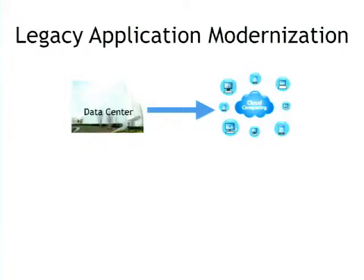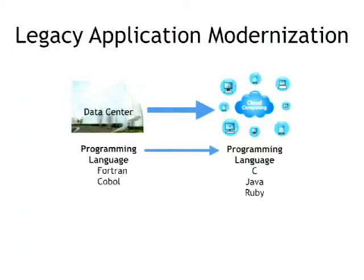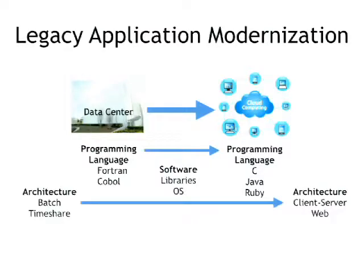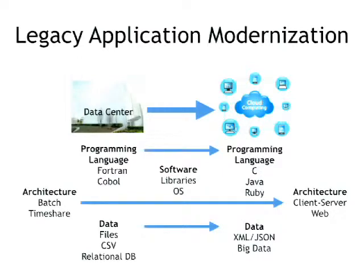They don't know all the code, and they're just praying with fingers crossed that it doesn't break. Then you come along and say, we need to move this out of the data center into a cloud computing environment. That's more than just changing the language it's written in. You have to think about the libraries, the operating system underneath, changes in architecture. I've still seen systems today where people ask, what are we going to do about the JCL? And then you have data that has to be translated — completely different kinds of architectures for how data is represented and handled.